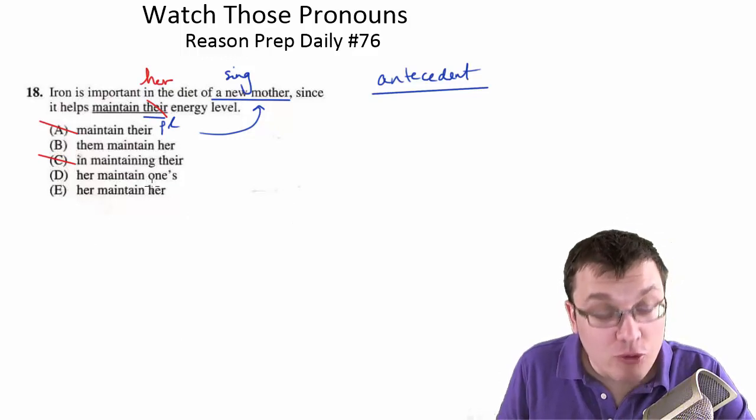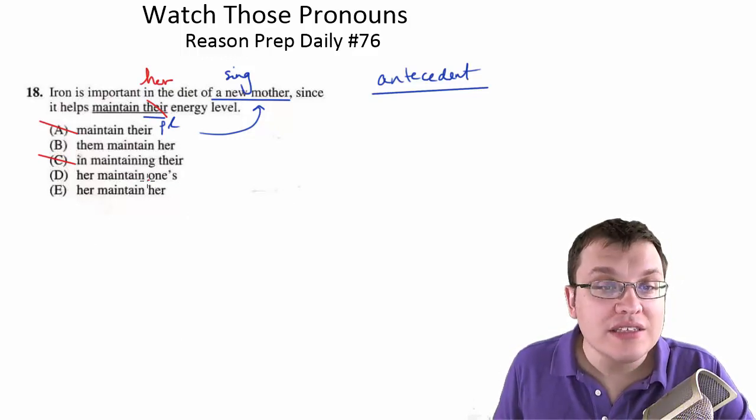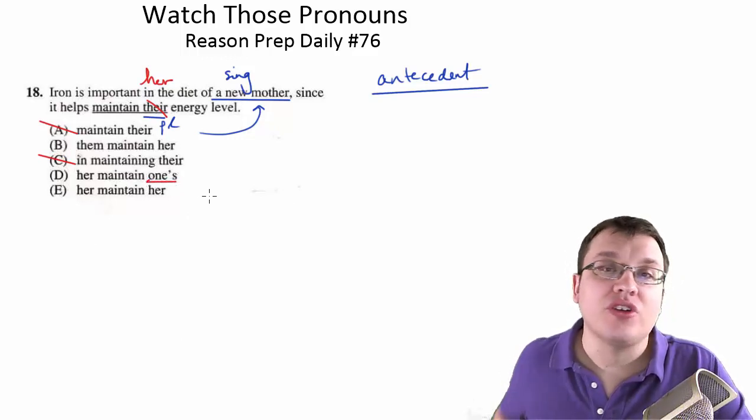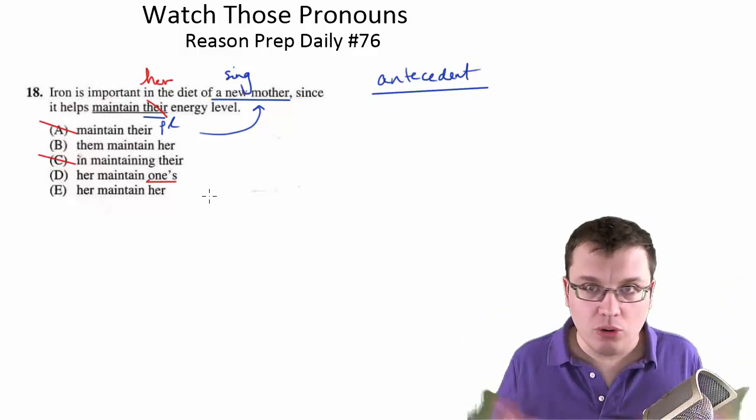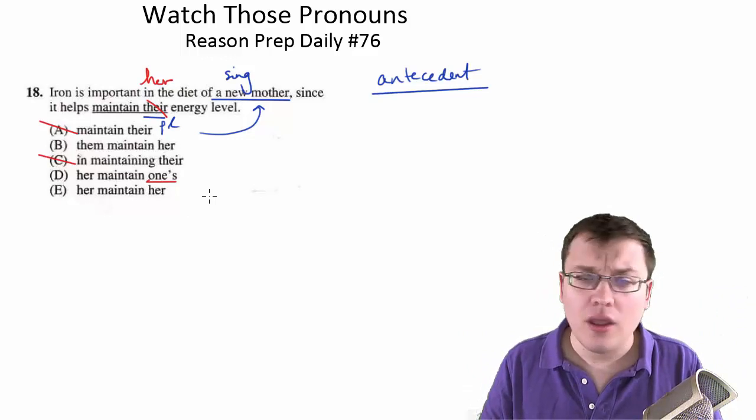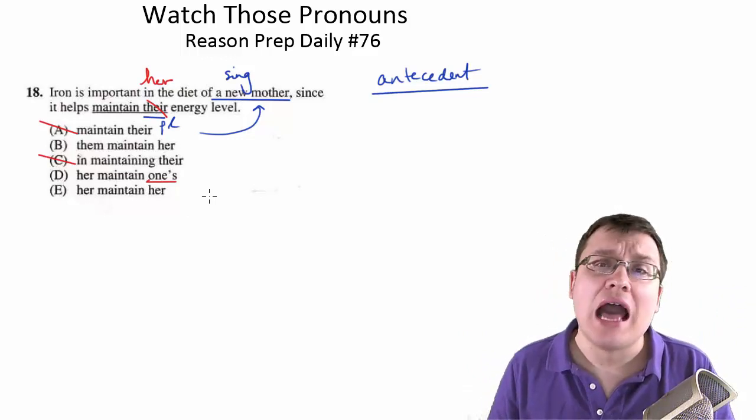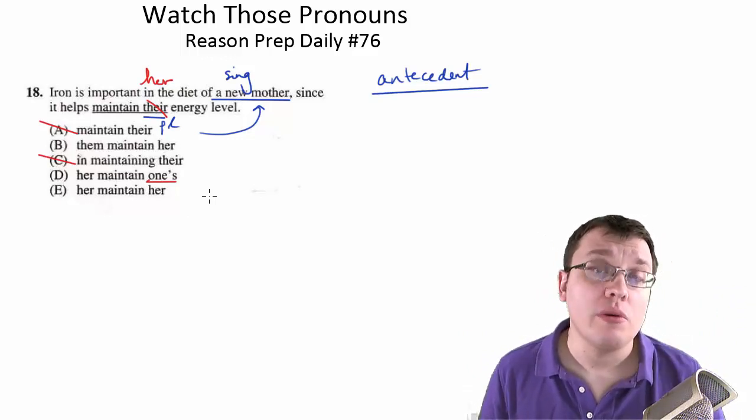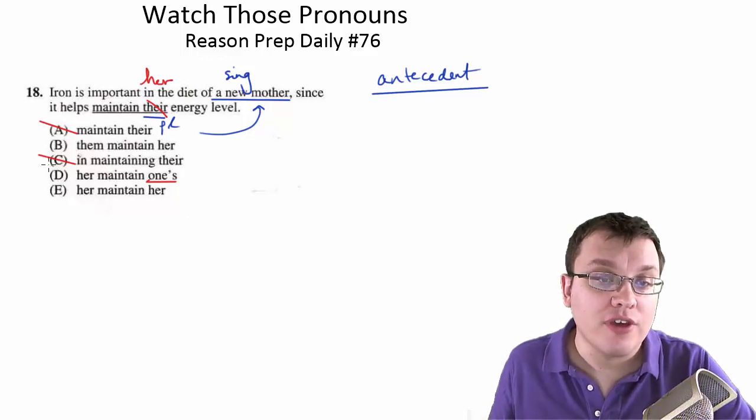Now in D, we have 'one's'. 'One's' is an indefinite pronoun, you use it to kind of stand in for the general, typical person, some kind of indefinite person. And we don't want that here, because we already have a person, it's a mother. So we would want to use her there, not 'one's', so we can get rid of D.